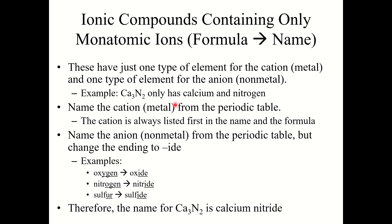When naming these compounds, you start with the cation. You simply name the metal as it appears in the periodic table — no prefix or suffix changes needed. The cation is always listed first in both the name and the chemical formula. Next, name the anion by taking the element name and changing the ending to "-ide". For example, oxygen becomes oxide, nitrogen becomes nitride, sulfur becomes sulfide. So Ca3N2 is named calcium nitride.